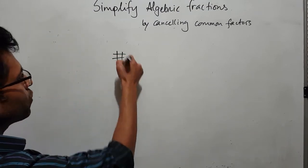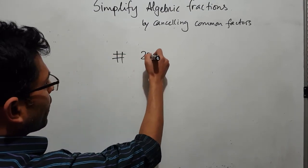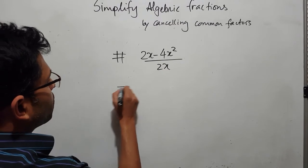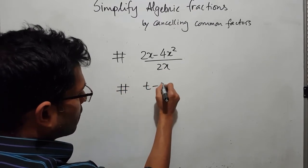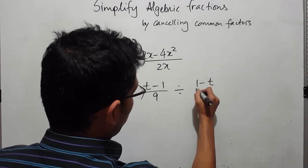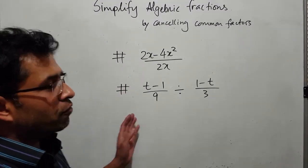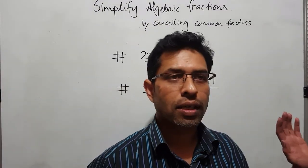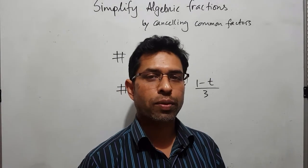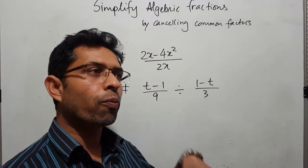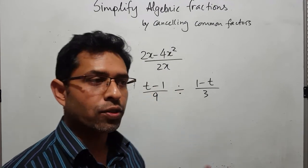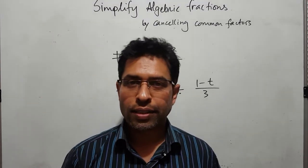I'm going to leave two questions for students to answer. The first question is: simplify (2x minus 4x squared) over 2x. The second question is: (t minus 1) over 9, divided by (1 minus t) over 3. If you understand the whole lesson you should be able to answer these. If you feel any difficulty, write in the comment box, go back and watch the video again, and do more practice. Thanks for watching.